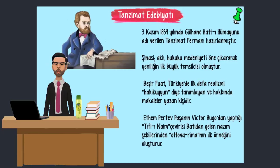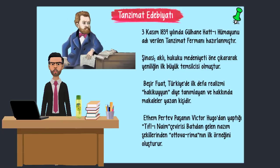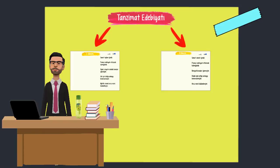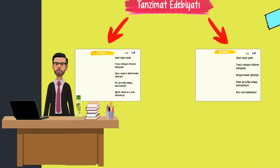Şinasi, aklı, hukuku, medeniyeti öne çıkararak yeniliğin ilk büyük temsilcisi olmuştur. Beşir Fuat, Türkiye'de ilk defa realizmi 'hakikiyun' diye tanımlayan ve hakkında makaleler yazan kişidir. Ethem Pertev Paşa'nın Victor Hugo'dan yaptığı Tıflılı Naim çevirisi, batıdan gelen nazım şekillerinden Ottawa Rima'nın ilk örneğini oluşturur. Şimdi ise Tanzimat Dönemi 1. Dönem ve 2. Dönem özelliklerine bakıyoruz.